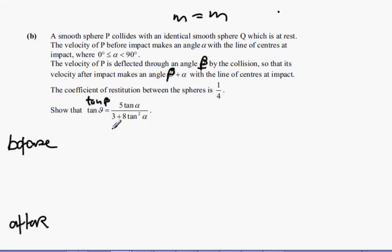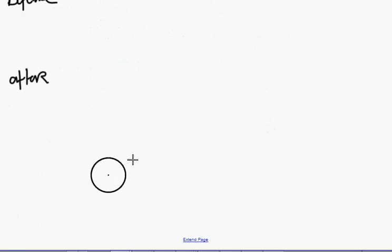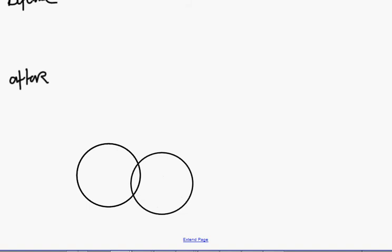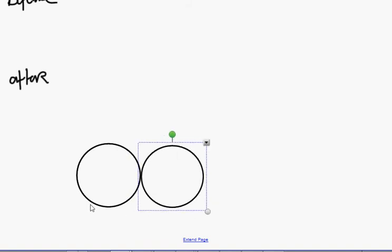We're going to call it particle P and particle Q. So particle Q is not moving and P is coming in like so.